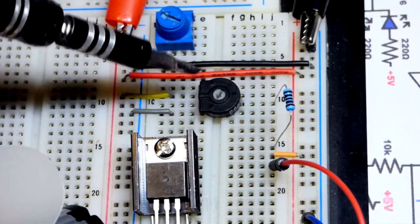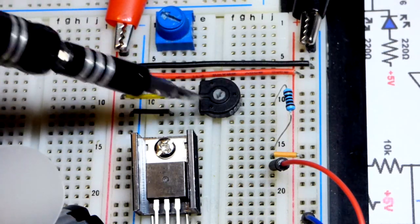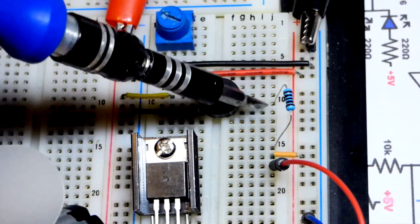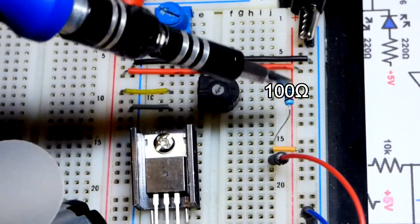Coming out of the trim pot here wired as a voltage divider, you can see we have the supply voltage across the two ends of the resistive element, and then there's a wiper that right now is to the negative supply.